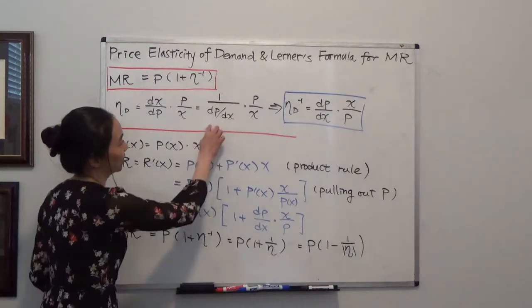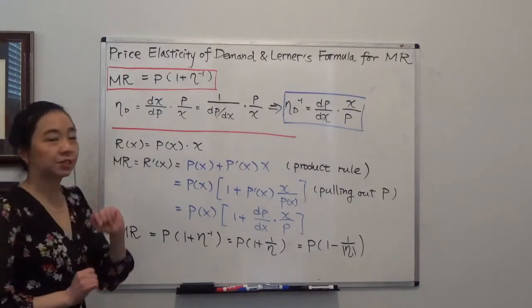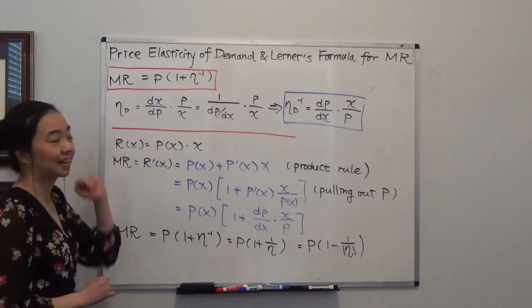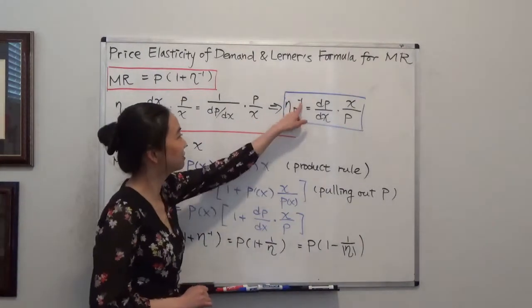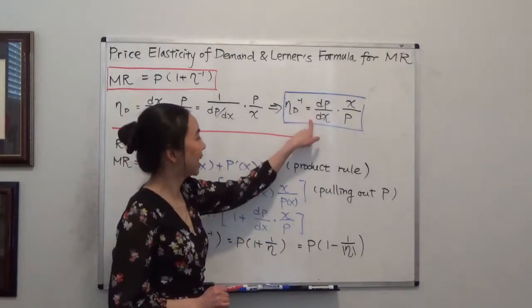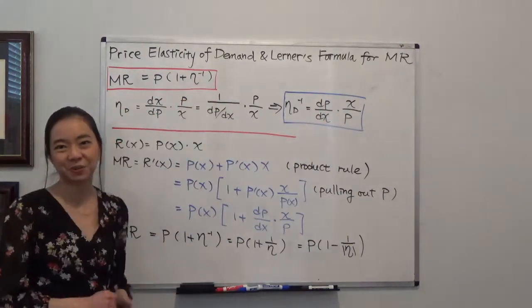So that one times p over x. So I can write the reciprocal of price elasticity of demand, eta to the power of negative 1, is equal to dp/dx times x over p. So you can see that I'm just flipping everything around here.